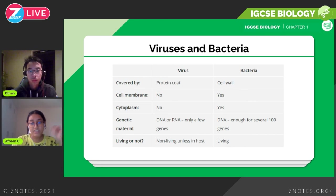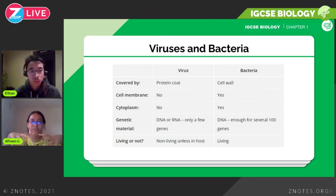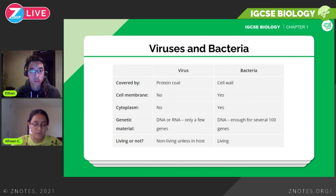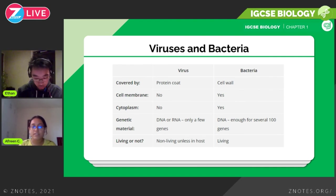Bacteria are living organisms. They do have a cell wall, cell membrane, and cytoplasm — the basic cell organelles. However, they do not have a nucleus; instead they have free-floating genetic material and plasmids. So the key points are: bacteria have a cell wall, no nucleus, and free-floating DNA. You could get questions in MCQs and Paper 4 asking you to identify bacterial cells or describe their adaptations.